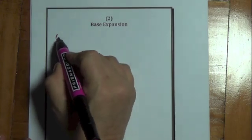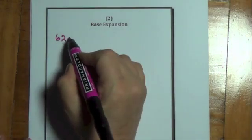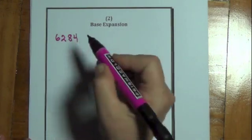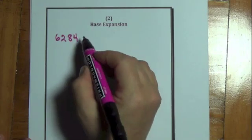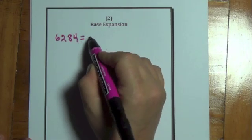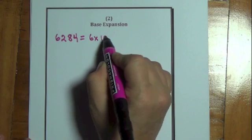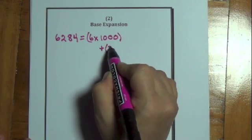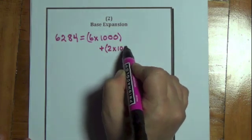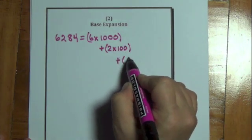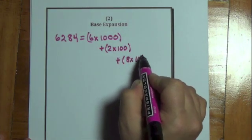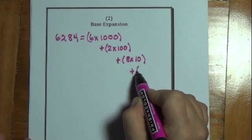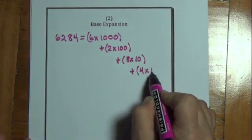I'll begin by expanding in base 10 the number 6,284. The number 6,284 is equal to 6 times 1,000 plus 2 times 100 plus 8 times 10 plus 4 times 1.